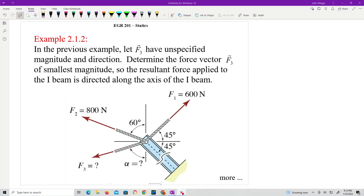This example is 2.1.2 and it's very similar to the previous one. The major difference is we don't know what F3 is. There's a lot of things we know and don't know. In the previous example, we knew what it was - it was specified with magnitude and direction. This one is not.